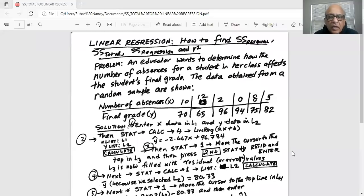An educator wants to determine how the number of absences for a student in her class affects the student's final grade. The data obtained from a random sample are shown. Number of absences is x, the independent variable, and final grade y is the dependent variable.